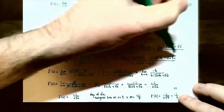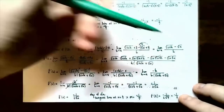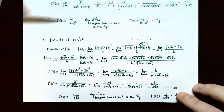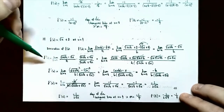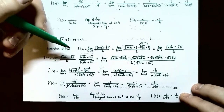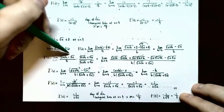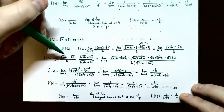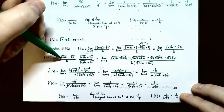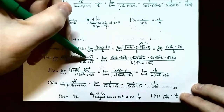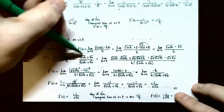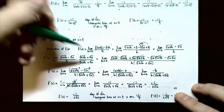There are no fractions to get an LCD for, and no h to factor out in the numerator. When you have radicals, the trick is to multiply by the radical conjugate — multiplying by 1 in a creative way. Take the numerator and change the sign between the two radicals: square root of x plus h plus square root of x. Multiply both numerator and denominator by this conjugate so the expression is unchanged.